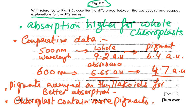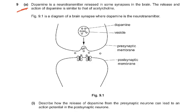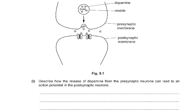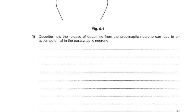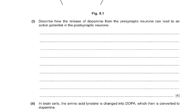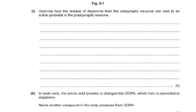That completes question 8. Moving to question 9: dopamine is a neurotransmitter released in some synapses in the brain. Its release and action is similar to acetylcholine. Figure 9.1 shows a brain synapse with dopamine vesicles, pre-synaptic membrane, and post-synaptic membrane. Describe how the release of dopamine from the pre-synaptic neuron can lead to an action potential in the post-synaptic neuron. Dopamine diffuses across the synaptic cleft, binds to a receptor on the post-synaptic membrane, sodium channels open, depolarization occurs, and if the threshold is crossed, an impulse is generated.